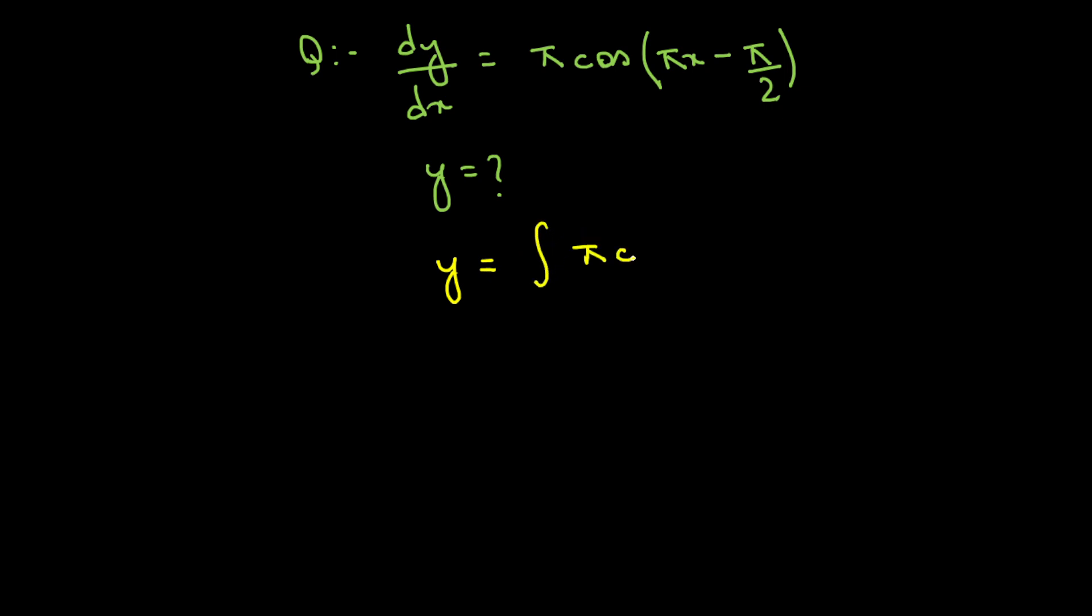pi cos pi x minus pi by 2, dx. If we integrate pi cos pi x minus pi by 2, we get pi sin pi x minus pi by 2